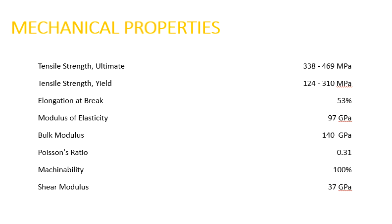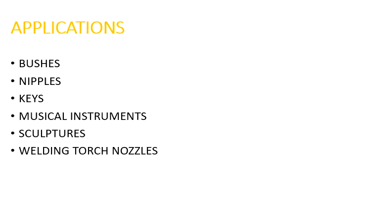Poisson's ratio of brass is 0.31, machinability of brass is 100 percent, and the shear modulus is 37 gigapascal. Now we see some applications of brass. Brass is used to make bushes, nipples, keys, musical instruments, sculptures, and welding torch nozzles.